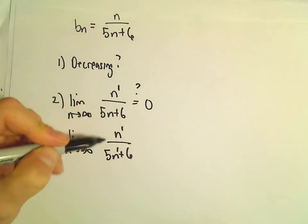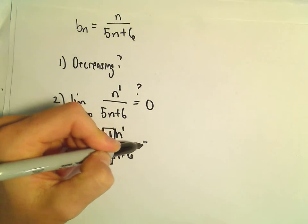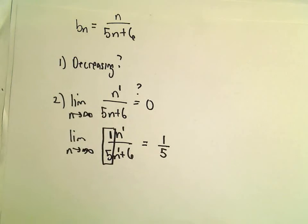But again, if the degree of the numerator equals the degree of the denominator, we can just use the ratio of the coefficients. So our limit's simply going to equal 1 fifth.